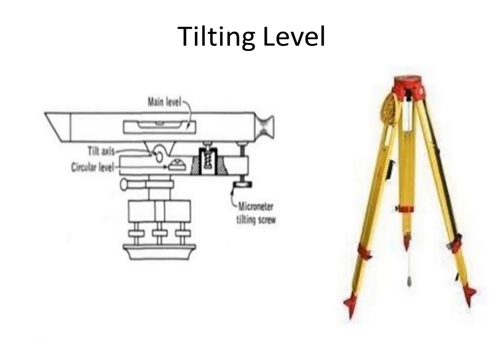This slide shows the tilting level instrument. It consists of a micrometer tilting screw, a tilt axis, and a circular level. It also consists of a telescope and a main level, and generally the main level is placed parallel to the telescope. At one end there is an eyepiece center and at the other end there is an object glass. Whenever you are trying to establish a line of sight in the direction of the staff held, you operate the tilting screw so that the bubble in the main level is at center, and then only you are supposed to take the staff reading.